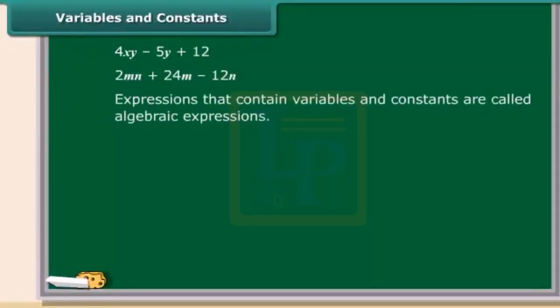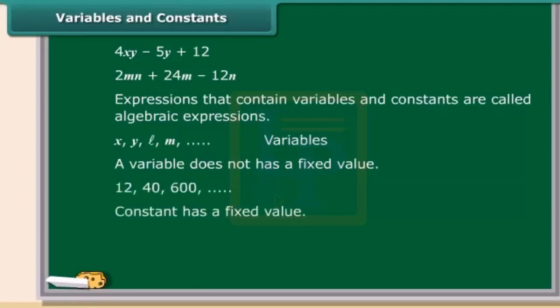Expressions that contain variables and constants are called algebraic expressions. The letters such as x, y, l, m and so on are used to denote variables. So a variable can take various values and its value is not fixed. On the other hand, a value that does not change is a constant.